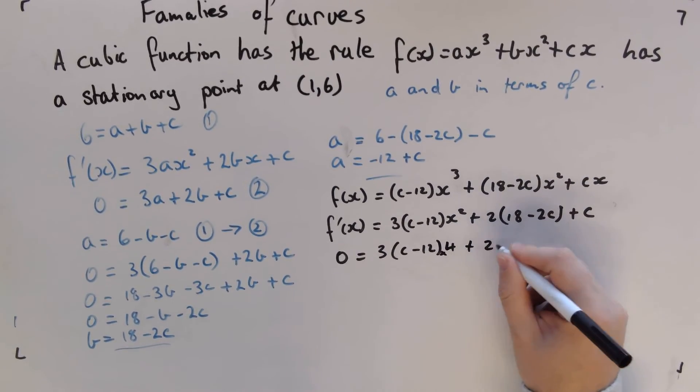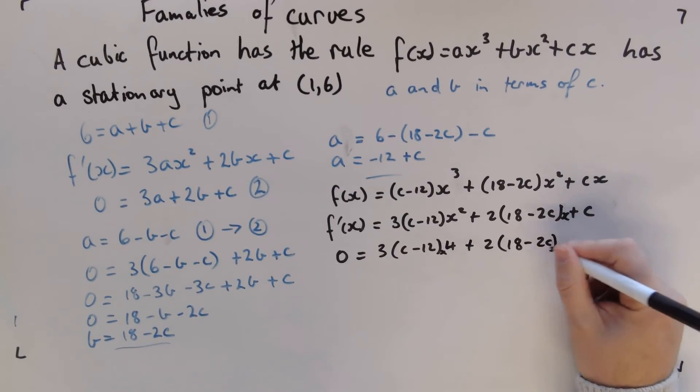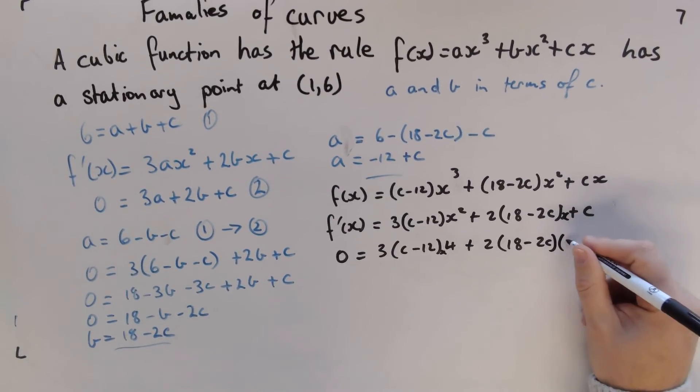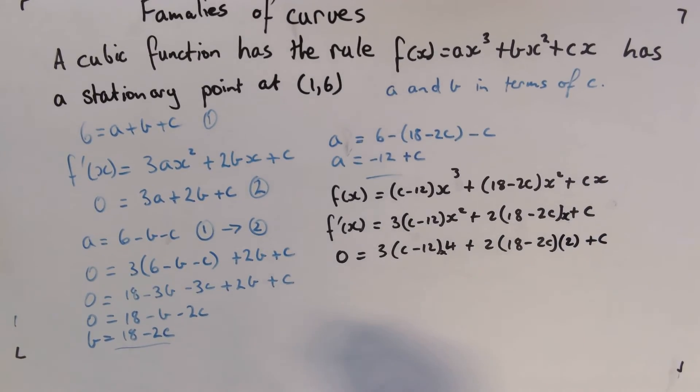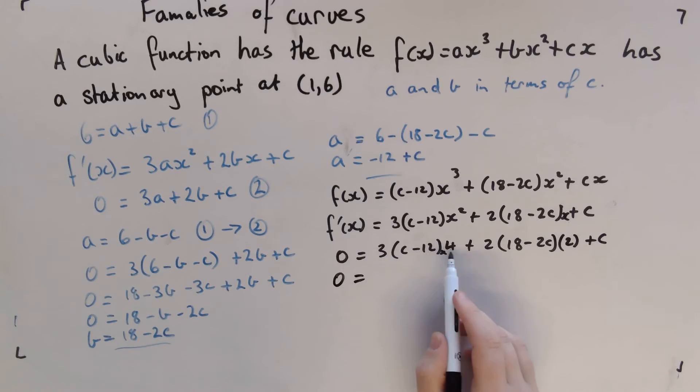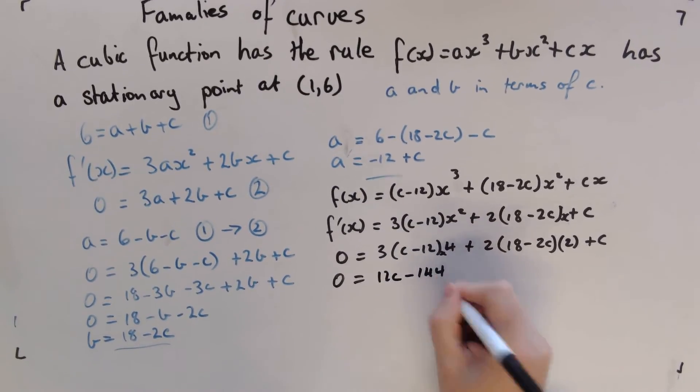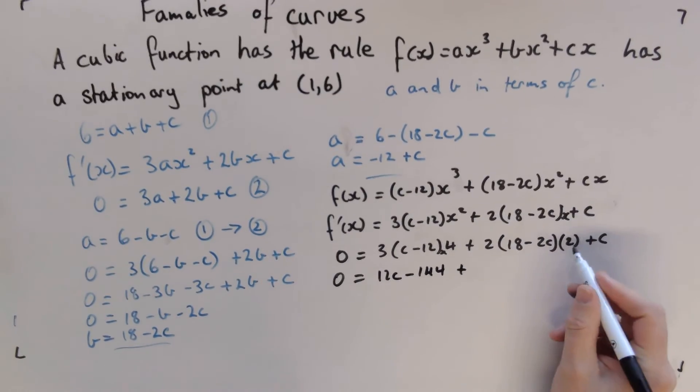So we get 3(c - 12) times x² is 4. So when we look at rearranging this, we've got 12 here, so we're going to have 12c - 144.